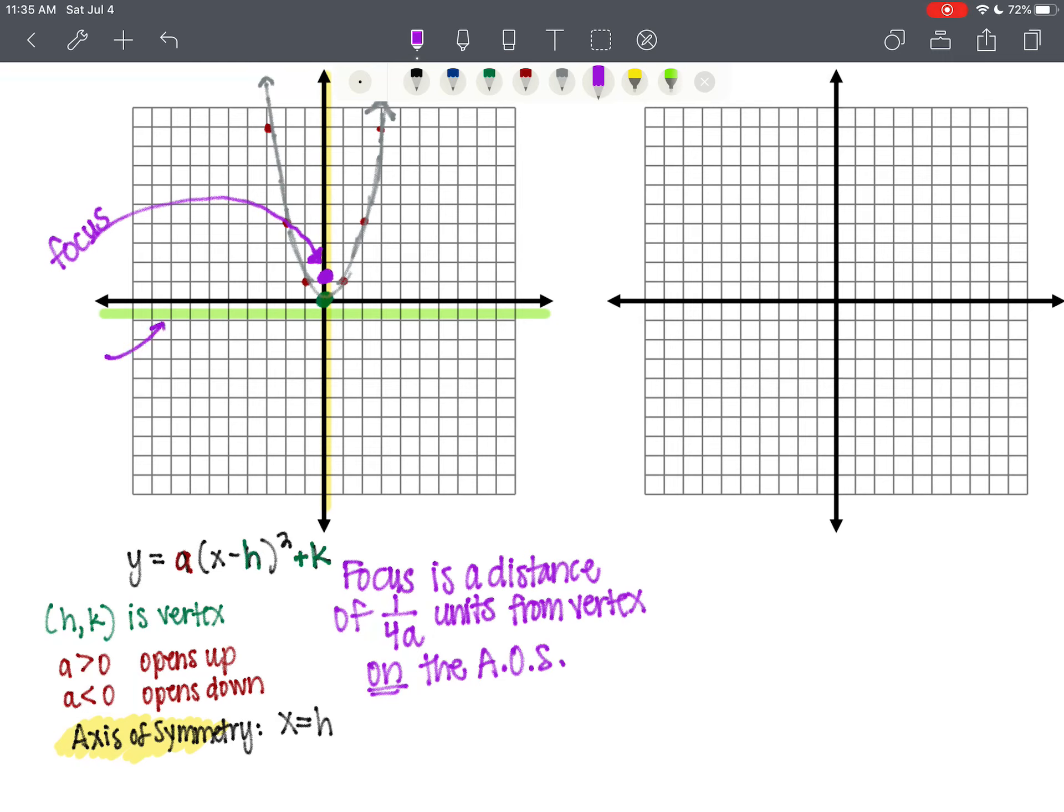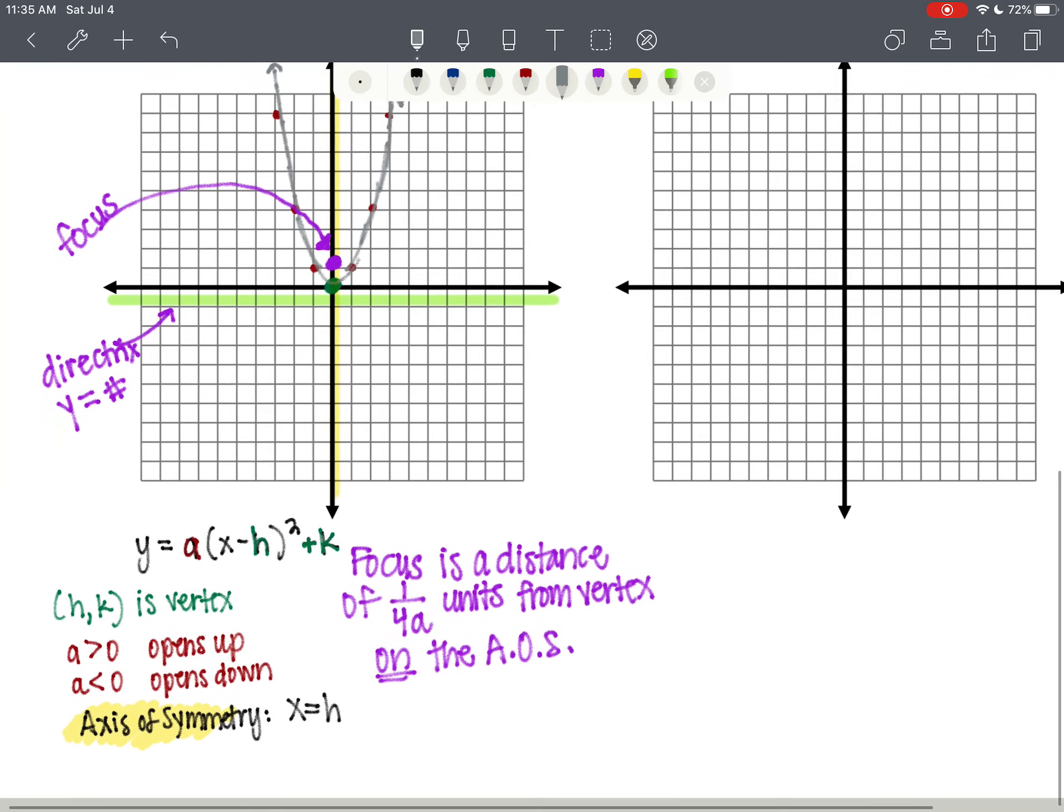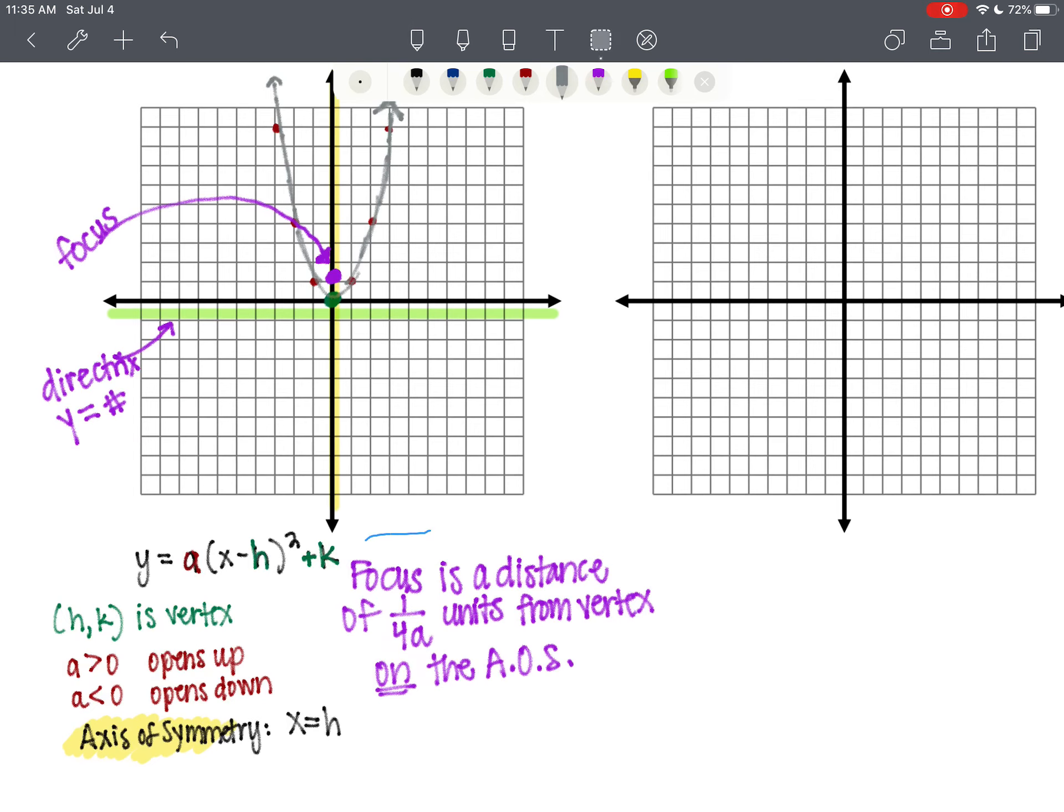So this right here is called a directrix, and the directrix is a horizontal line. So it's y equals some numerical value. I'll just put a pound sign. That stands for number, or at least it always used to before we started using them for hashtags.